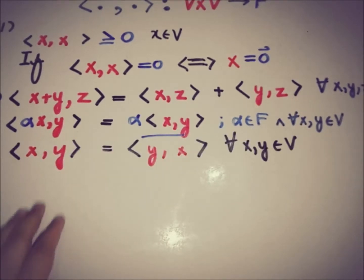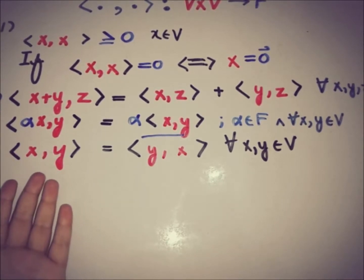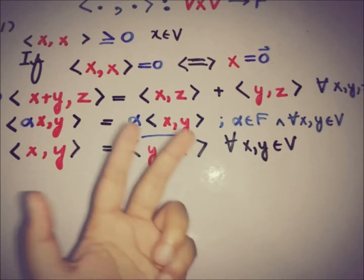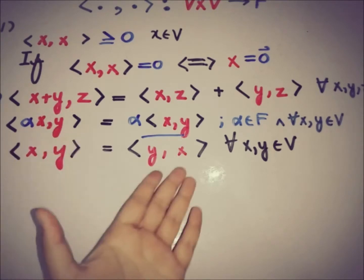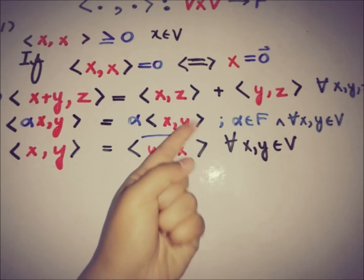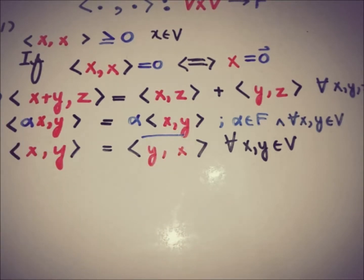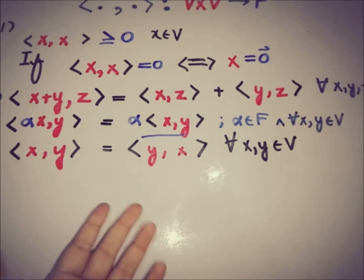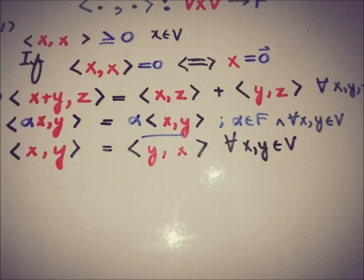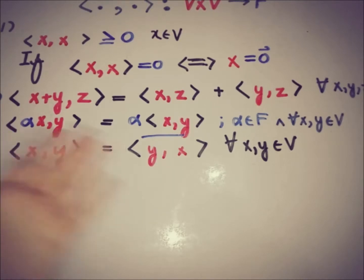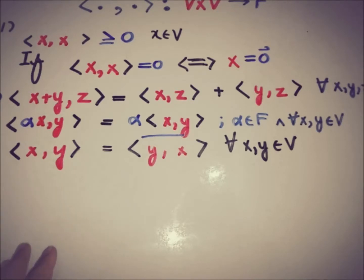The fourth property is mainly relevant when the underlying field is the complex plane. The inner product of x and y equals the conjugate of the inner product of y and x. This is why, when alpha is with y, we cannot extract it out easily — this will be illustrated more clearly in the next video on the Cauchy-Schwarz inequality.